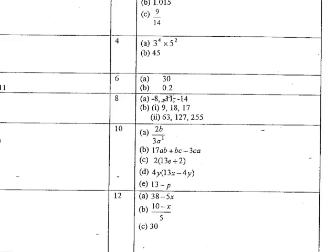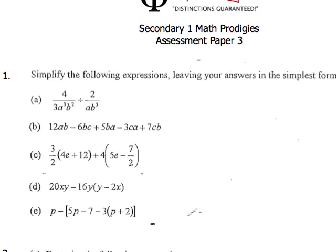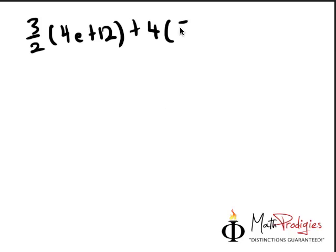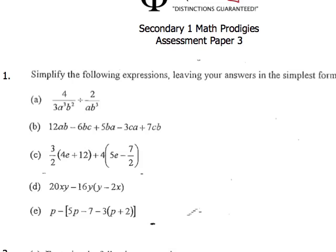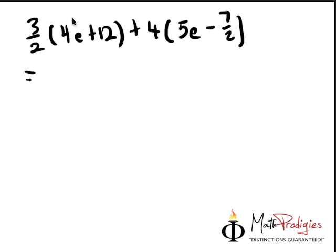Now we're going to move on to question number 3, part C of this question. So part C of this question is, I think, pretty simple. Let's take a look. Part C of this question is over here. So 3 over 2, 4e plus 12, plus 4, 5e minus 7 over 2. In this case, it's very simple. It's pretty straightforward. Simplify, right? So you just open this up.